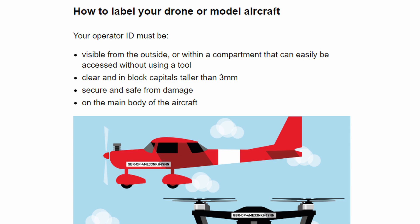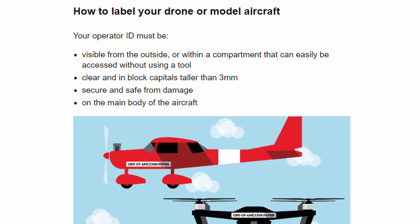So a battery compartment or something, but not if there are any screws to remove before accessing and reading the number easily. It should be clear and in block capitals taller than three millimeters, secure and safe from damage on the main body of the aircraft — not along the arms of the drone, for instance, as these could get separated from the drone in a crash or incident.